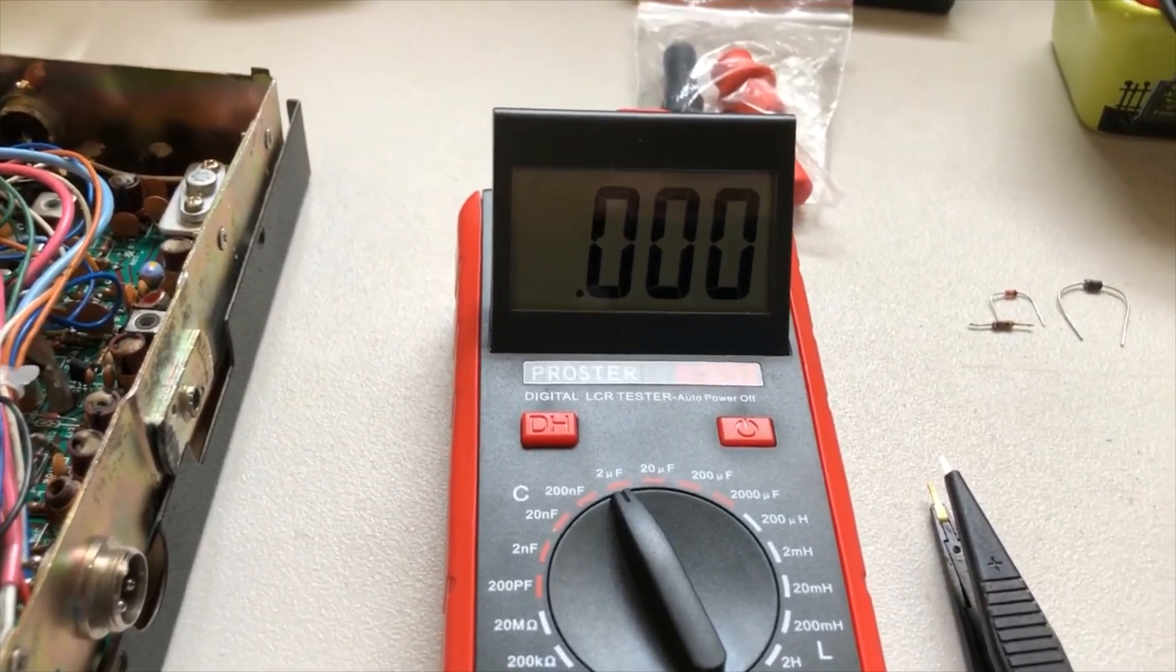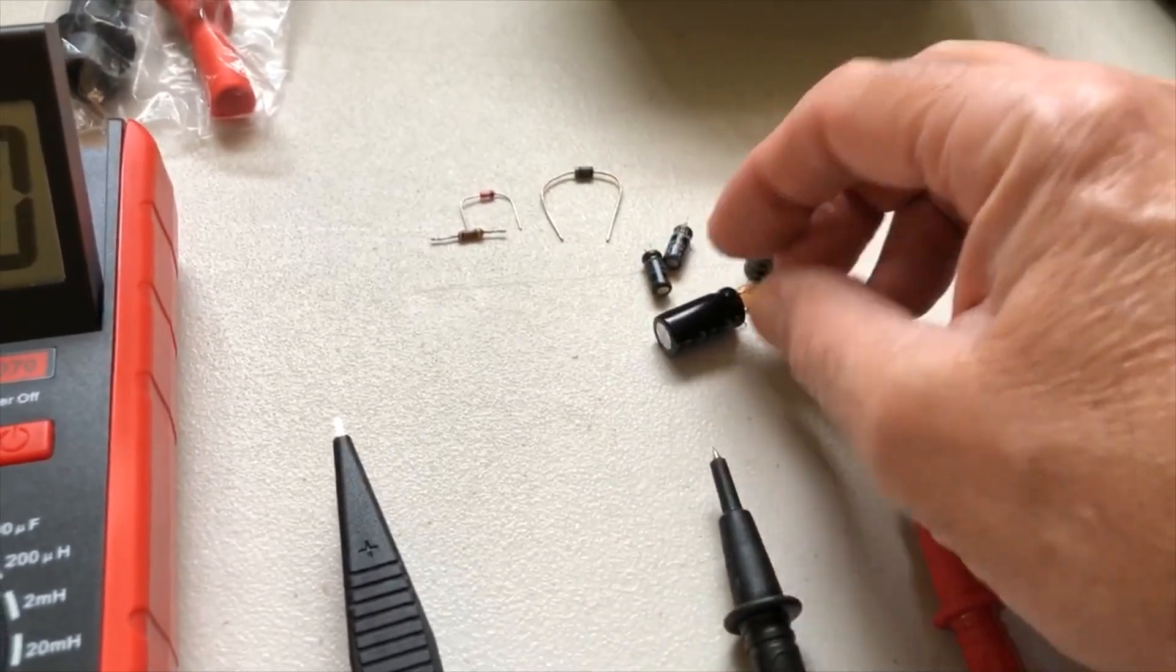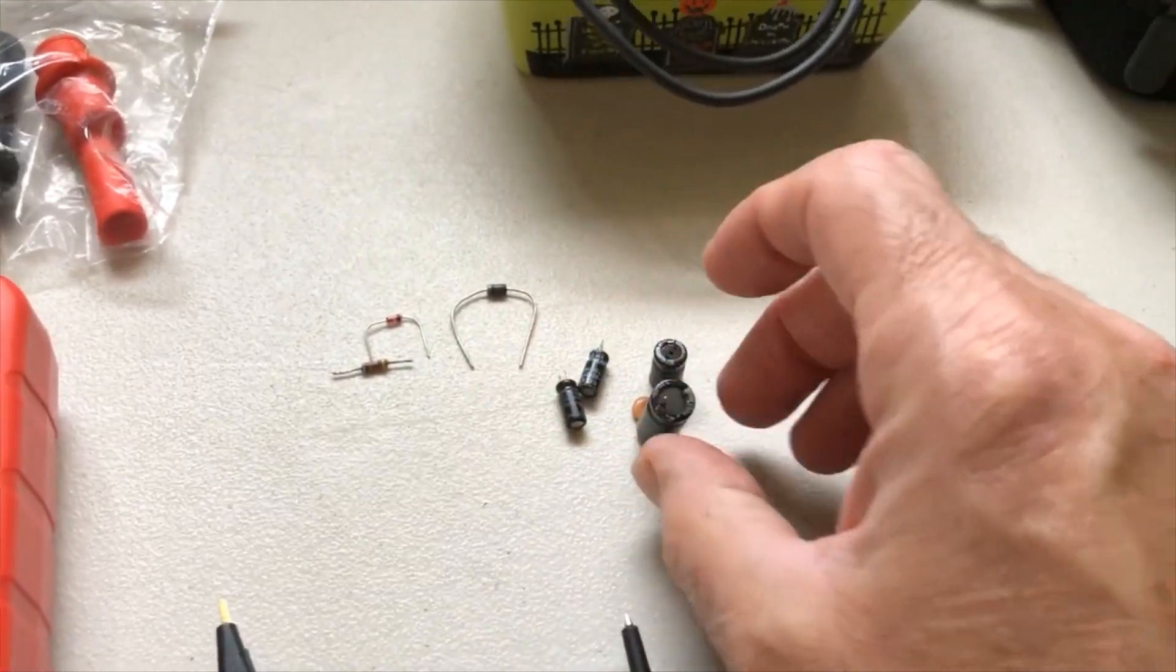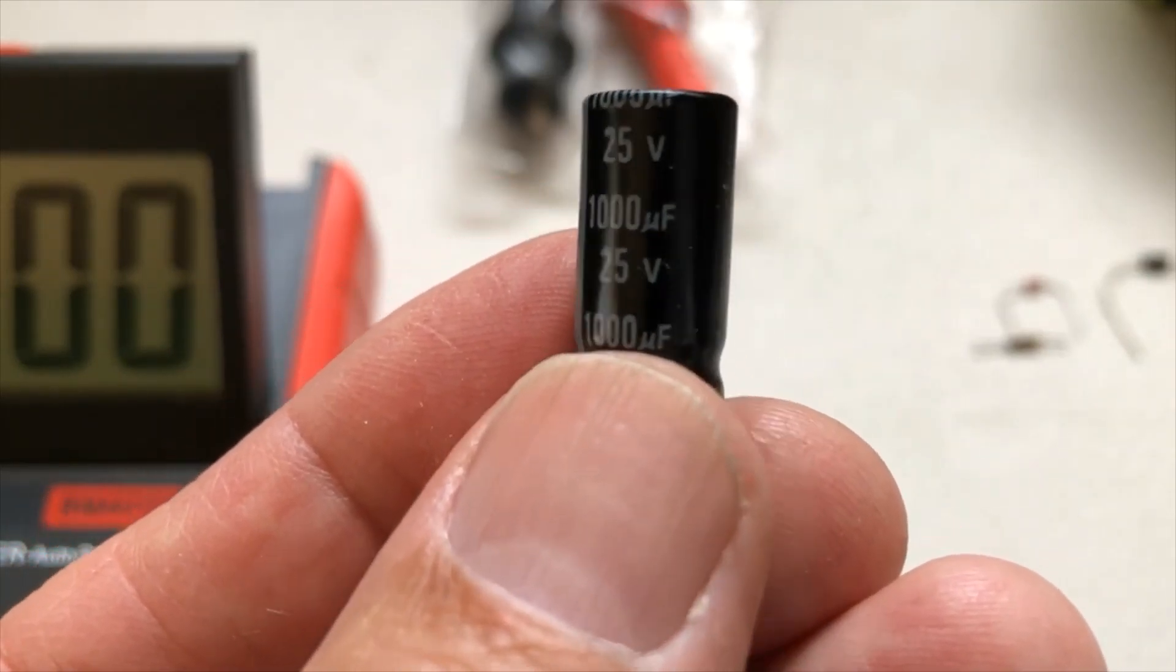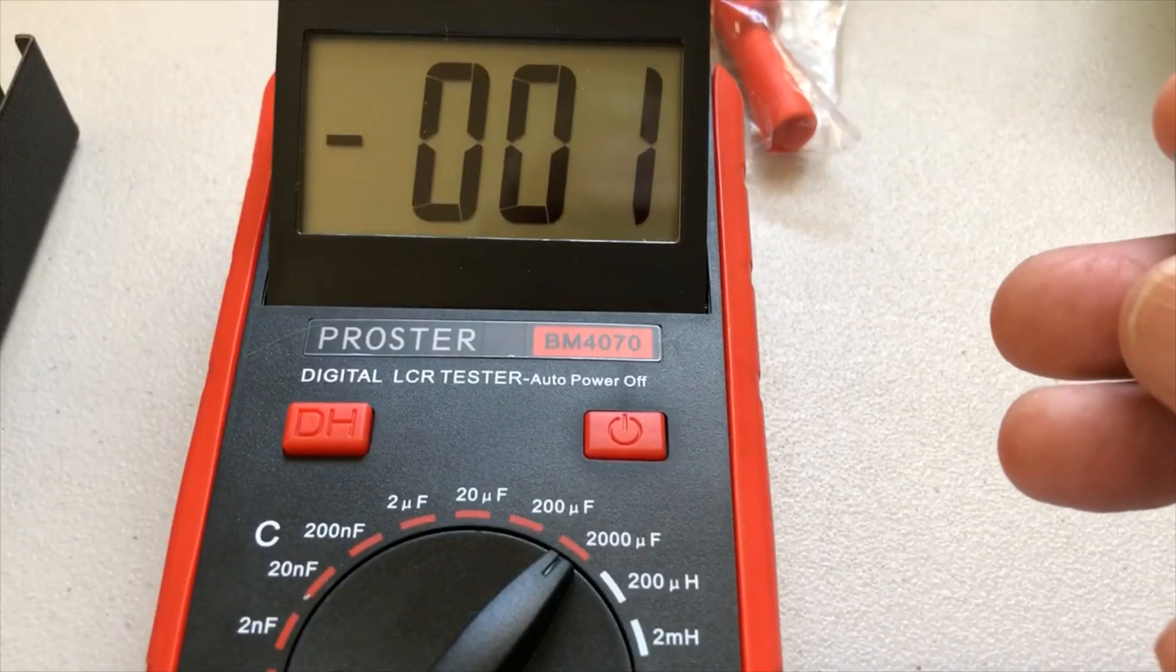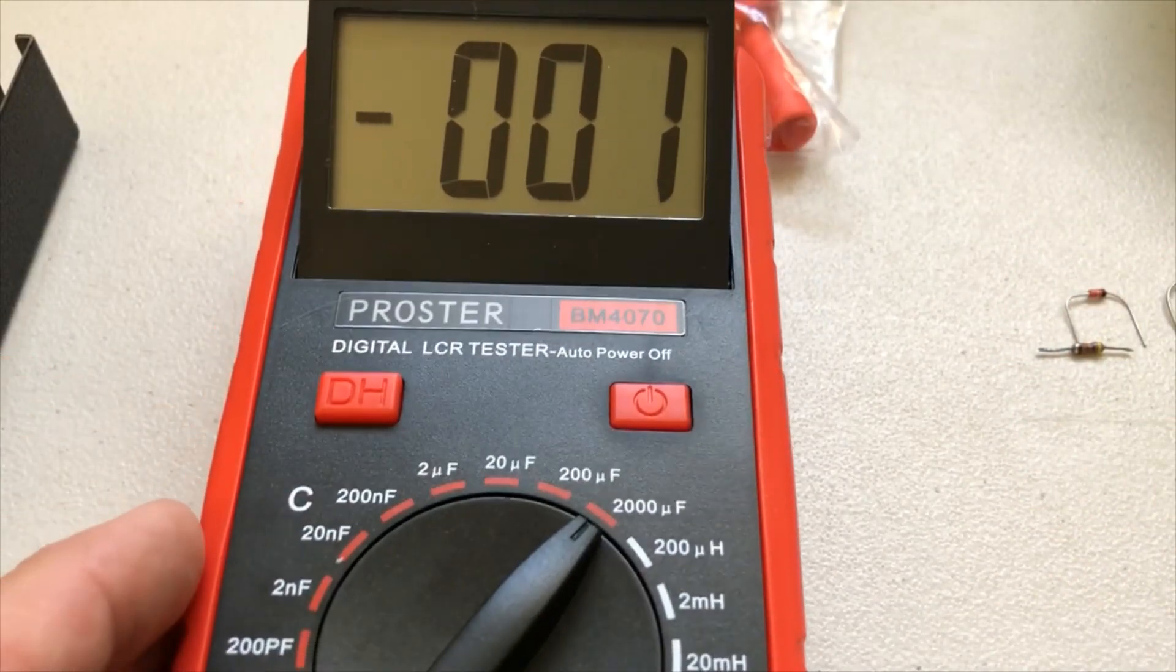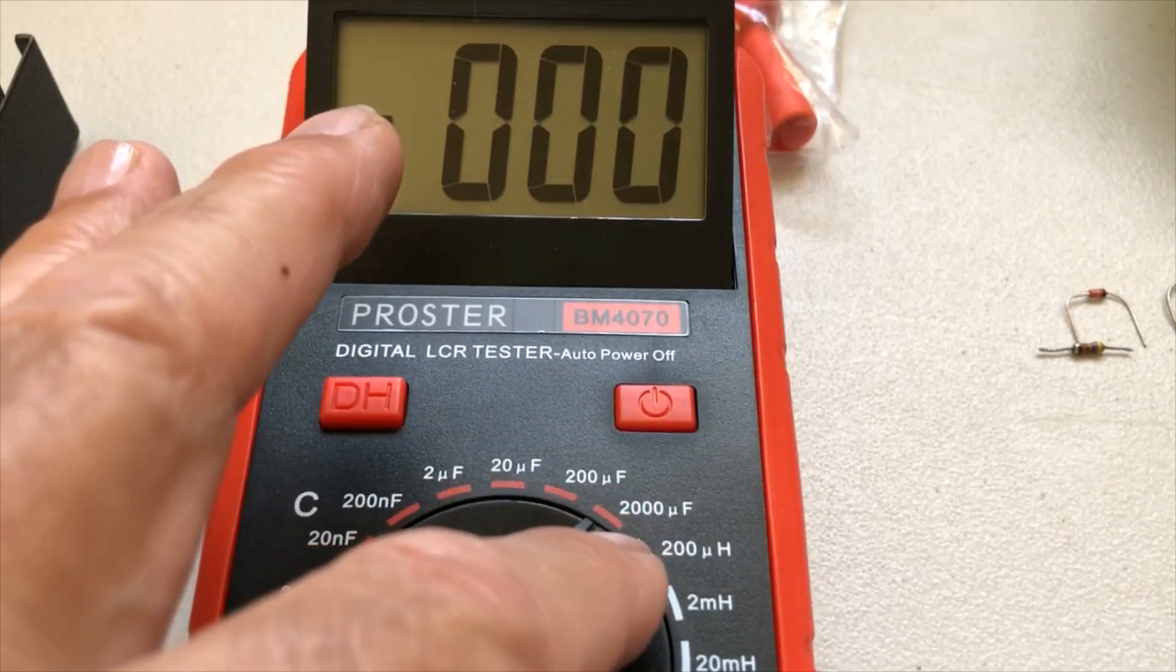Alright, let's go ahead and power our meter on. We have the screen flipped up so we can read it. Let's start with our electrolytic type capacitors. Our first capacitor is 1000 farads. So on our scale, we have to pick the right setting here. It's going to be between 200 and 2000.